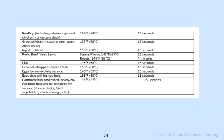The cooking temperature chart summarizes the following: Poultry requires 165°F for 15 seconds. Ground meat — including beef, pork, and other meat — requires 155°F for 15 seconds. Injected meats require 155°F for 15 seconds. Pork, beef, veal, and lamb steaks and chops require 145°F for 15 seconds. Roasts require 145°F for 4 minutes. Fish requires 145°F for 15 seconds. Ground, chopped, or minced fish requires 155°F for 15 seconds. Eggs for immediate service require 145°F for 15 seconds. Eggs that will be hot-held require 155°F for 15 seconds. Commercially processed ready-to-eat food not hot-held for service — such as cheese sticks, fried vegetables, or chicken wings — requires 135°F for 15 seconds.